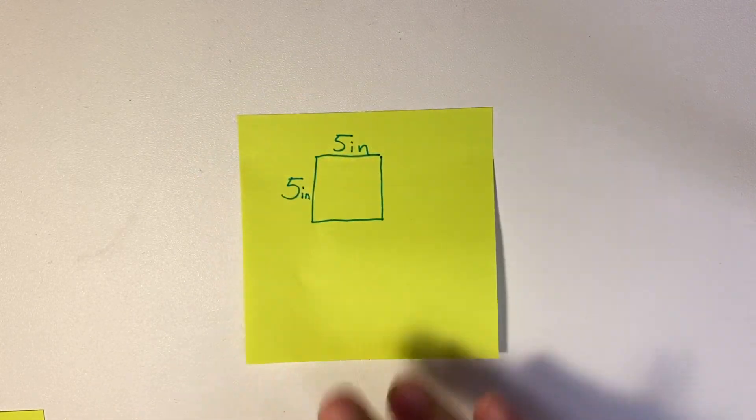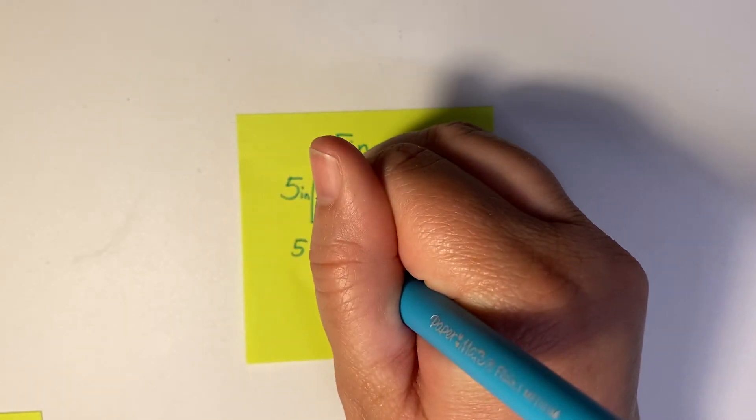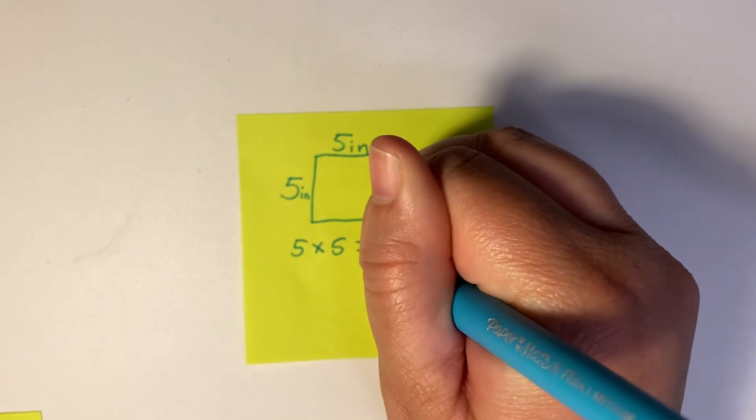Let's do one more example real quick. We have a five by five square, so we're going to do five times five equals the area.